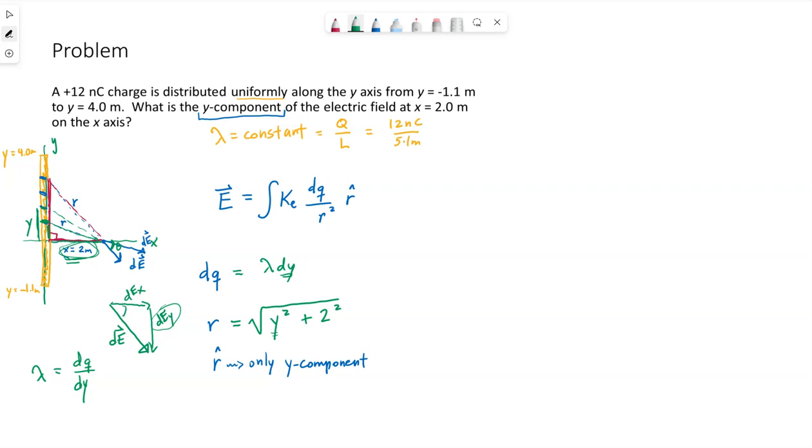We're only going to talk about the y-component because that is what this question is specifically asking us about. So dE, again, is represented by this k dq over r squared. That is the magnitude. What would we need to multiply this magnitude by to get this vertical side? Well, the y-component would be the magnitude times the sine of this angle specifically. It is a negative direction. It's in the negative y direction, which we will account for.